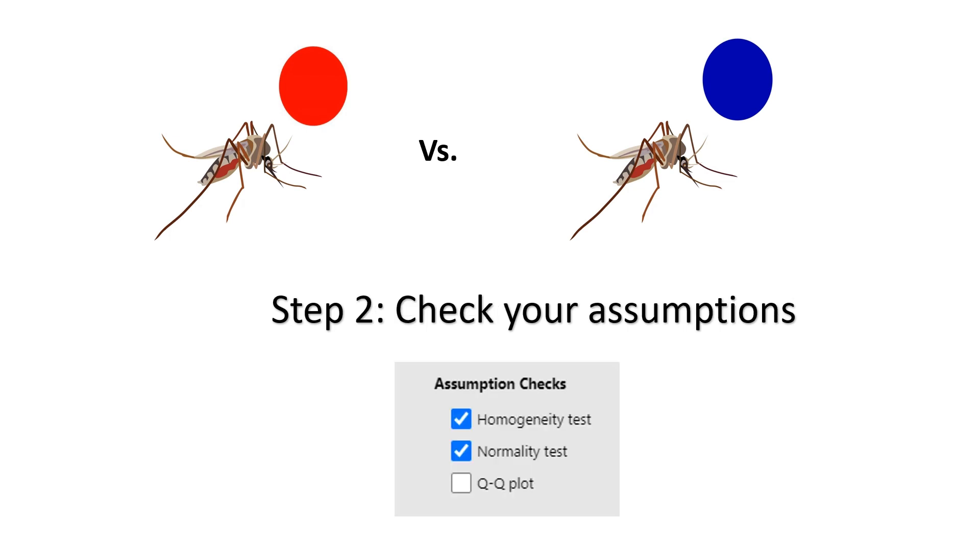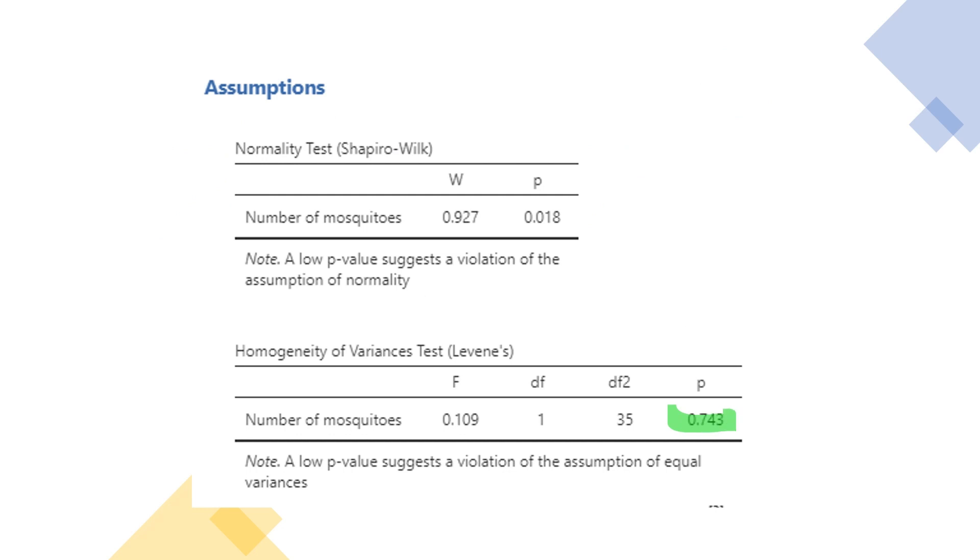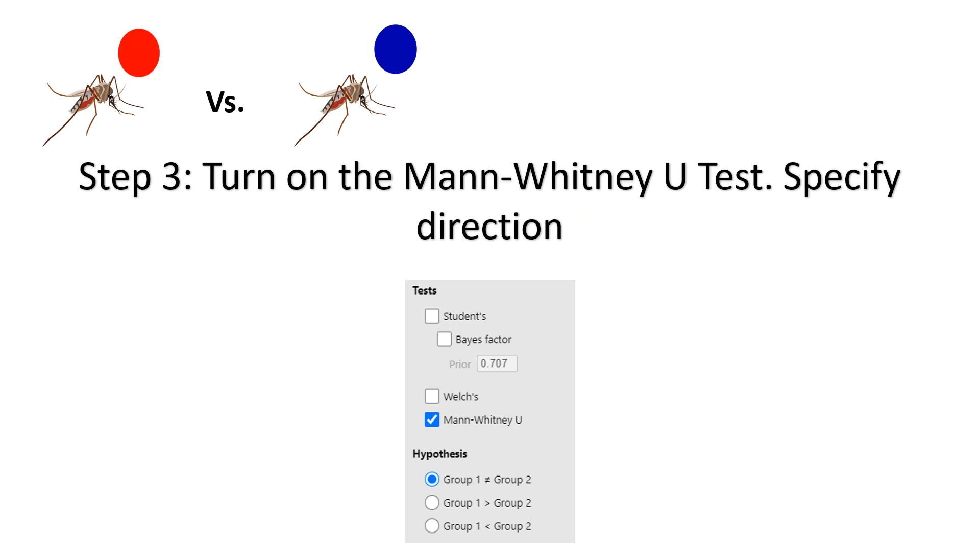Step two, check our assumptions. Hmm, something is not ideal. Our homogeneity of variance is fine, but the normality is not. But that's fine, it's cool, there's no need to panic. Let's just turn on the Mann-Whitney-U test instead of the standard t-test.